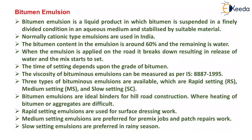Next is bitumen emulsion. Bitumen emulsion is a liquid product in which bitumen is suspended in a finely divided condition in an aqueous medium and stabilized by suitable material. Normally cationic type emulsions are used in India. The bitumen content in the emulsion is around 60% and the remaining is water. When the emulsion is applied on the road, it breaks down resulting in release of water and the mix starts to set. The time of setting depends upon the grade of bitumen. The viscosity of bituminous emulsion can be measured as per Indian Standard 8887:1995. Three types are available: rapid setting, medium setting, and slow setting.